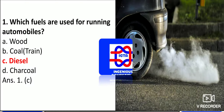Which fuels are used for running automobiles? The fuel which is used for the automobile is diesel. Wood becomes coal, and coal is used in trains, but a train is not an automobile. Diesel is used for all four-wheelers as well as heavy vehicles.